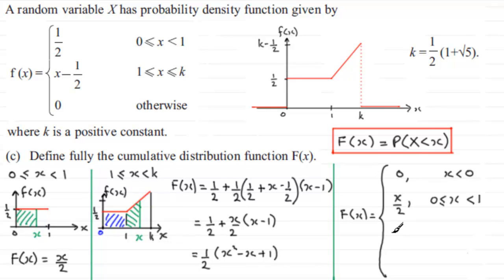And we saw that when that was the case, we ended up with a half of x squared minus x plus 1. And if I can just squeeze this in here, this is when x is greater than or equal to 1 but less than or equal to our constant value k.